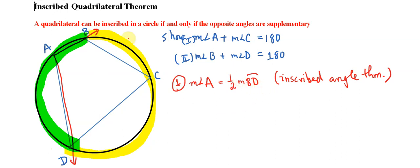So angle C intercepts arc, the other arc BD. Maybe we need to clarify this: this first BD, the yellow arc that's kind of the bigger one, we'll call this BD major. And then the second part here we can say that angle C is equal to one half the measure of arc BD minor.